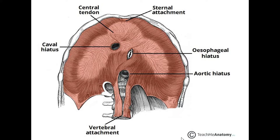Before we move on, I just want you guys to look at the different labels so you have an idea of the different openings and areas. The diaphragm is this thing right here. In the middle we see the central tendon, we see the caval opening, the esophageal hiatus, the sternal attachment, the aortic hiatus, and the vertebral attachment.